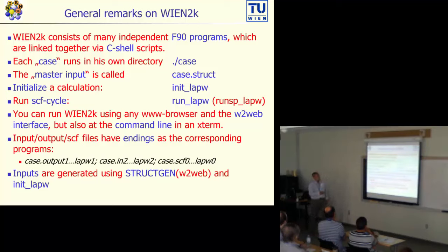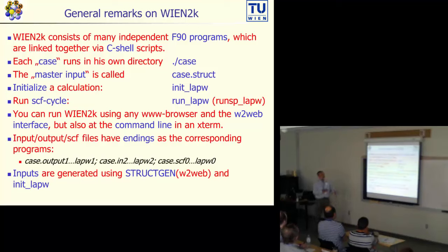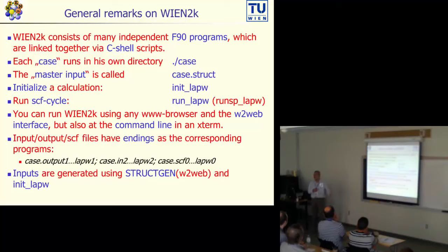The basic steps are: after you have prepared such a structure file, you initialize the calculation — the Linux command would be like this — and then you run the SCF cycle. All these steps can be done in our Wien2Web interface, or you will have in the exercises the opportunity to also try typing commands at the command line in a terminal window, so you can use and get to know both interfaces. I will today demonstrate Wien2Web, since for the beginner it is the simpler interface.